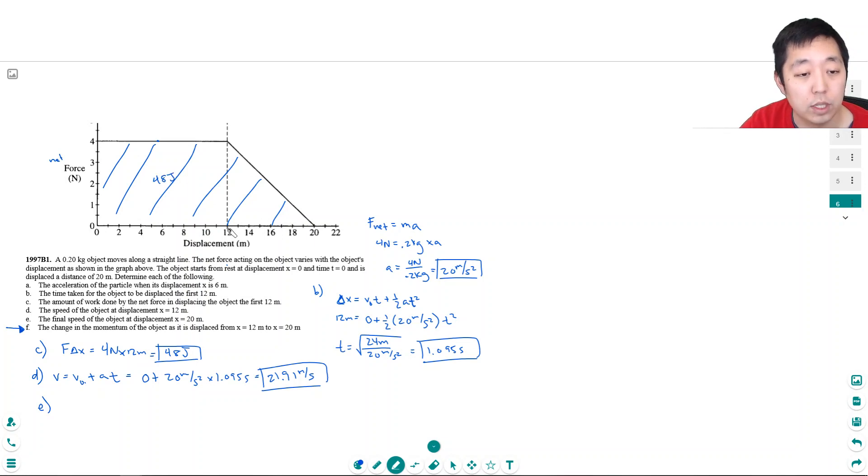This area of this triangle—12, let's see, that's 8 by 4—is 32, so 16 joules. This is a total of 64 joules. That's how much work was done, and all of that had to go into one half mv squared. So v equals the square root of 128—because I multiplied by 2—divided by the mass, which is 0.2 kilograms. That equals 25.3 meters per second.